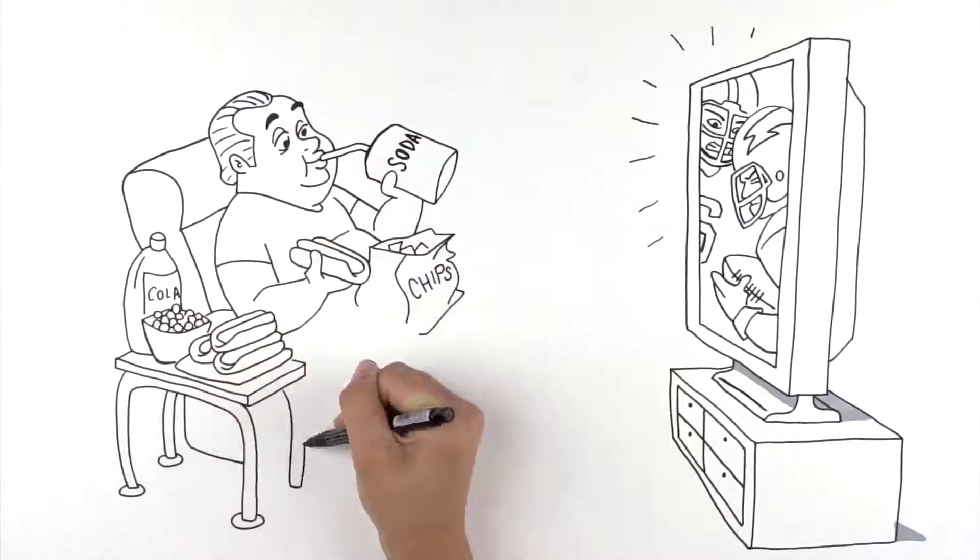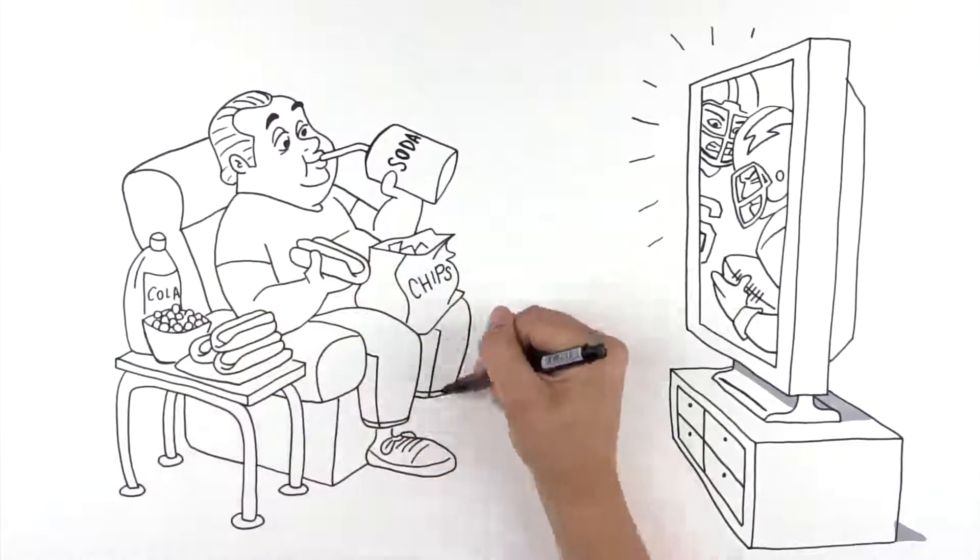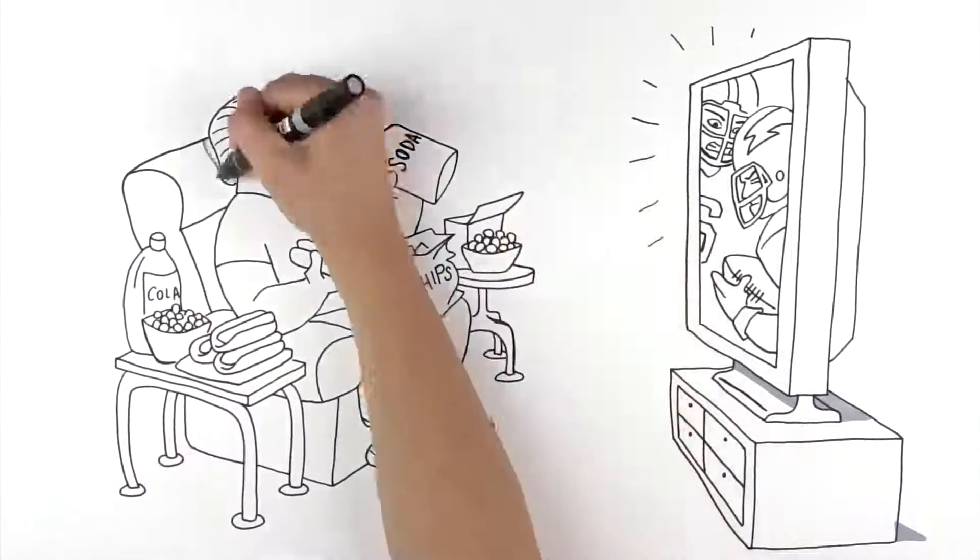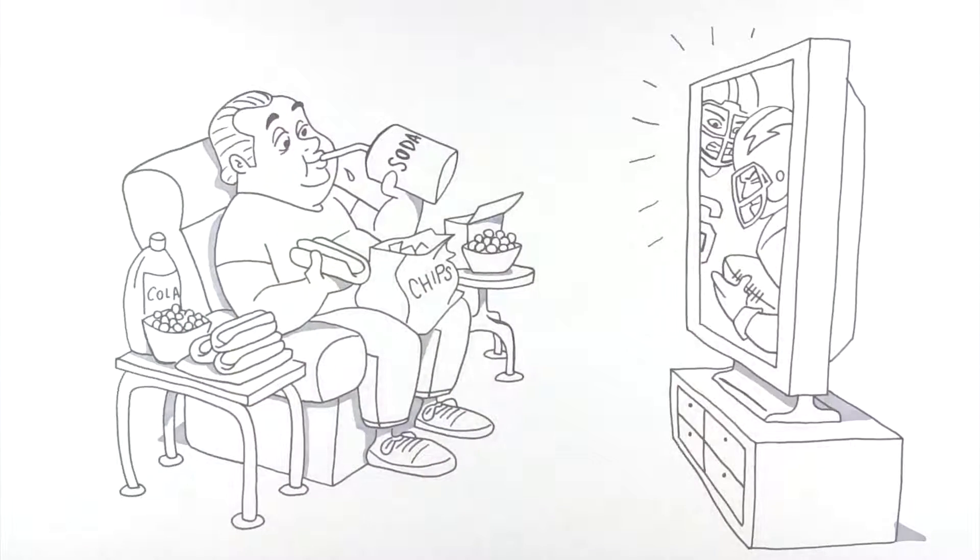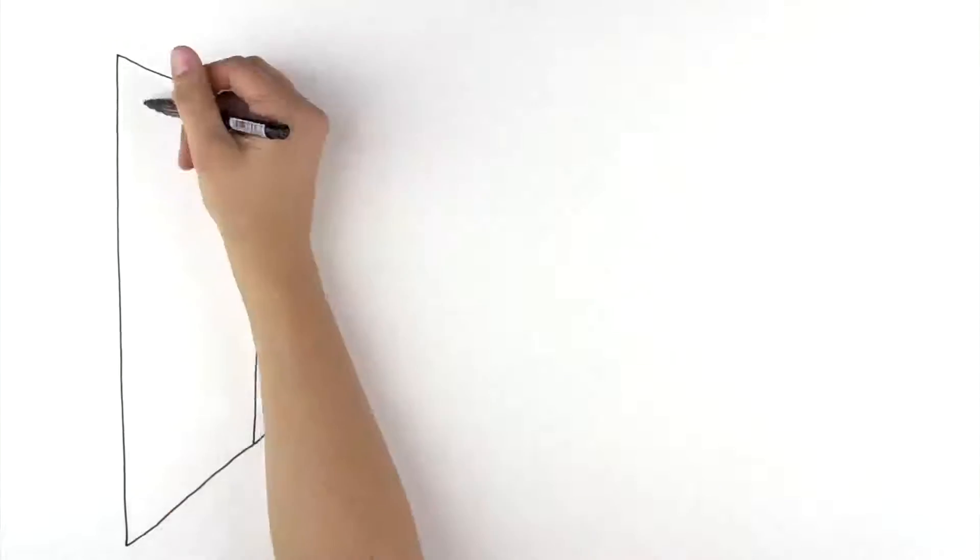But halfway through the second quarter, Jay's festivities are interrupted by terrible chest pain. He finally succumbs to the pain and has his wife rush him to the ER. After Jay receives a litany of tests,